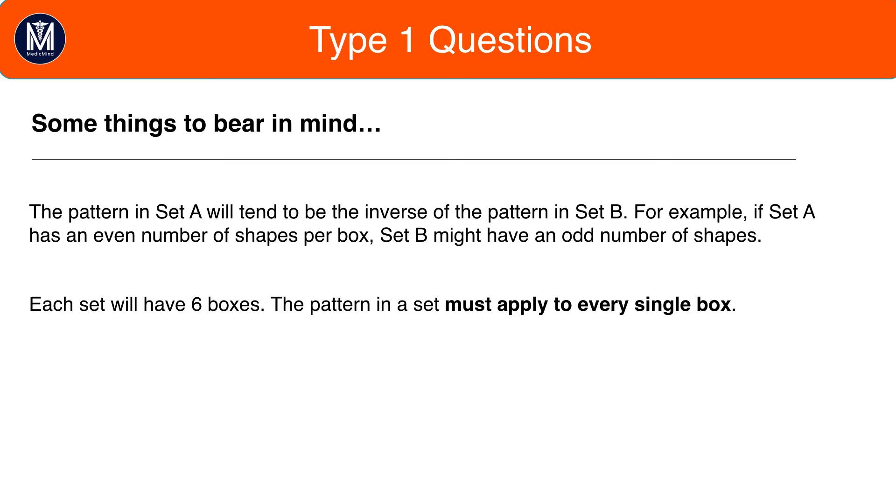The pattern in Set A will tend to be the inverse of the pattern in Set B. For example, if Set A has an even number of shapes per box, Set B might have an odd number of shapes. Even if they're not an exact inverse, they will be related.